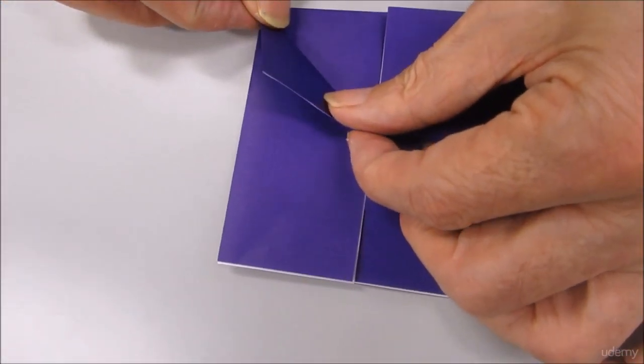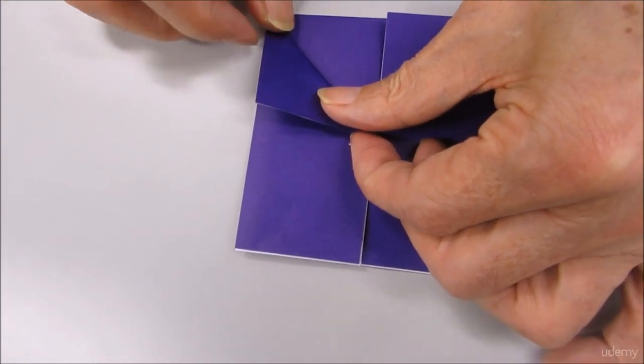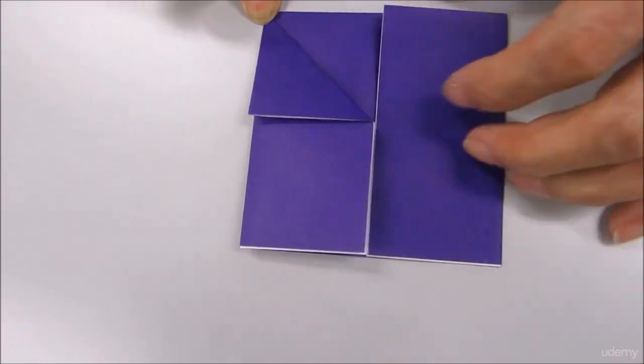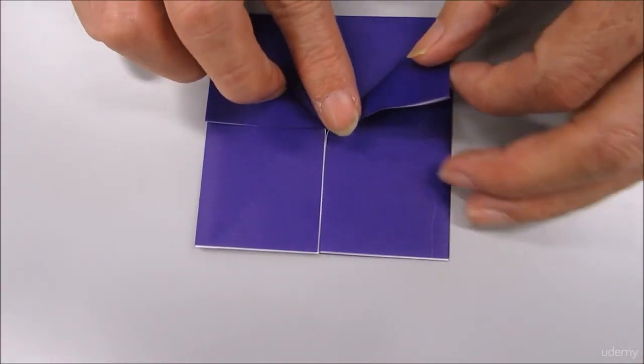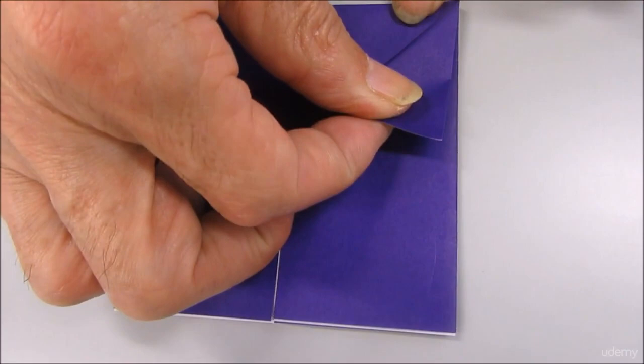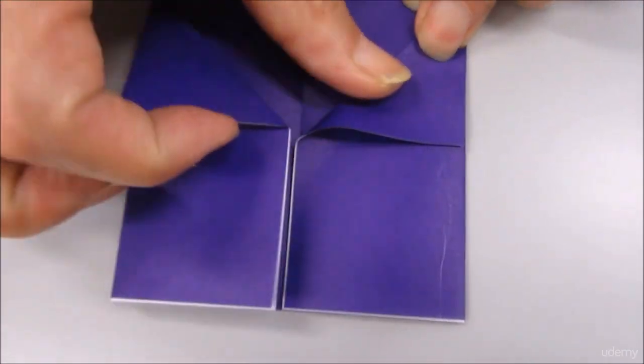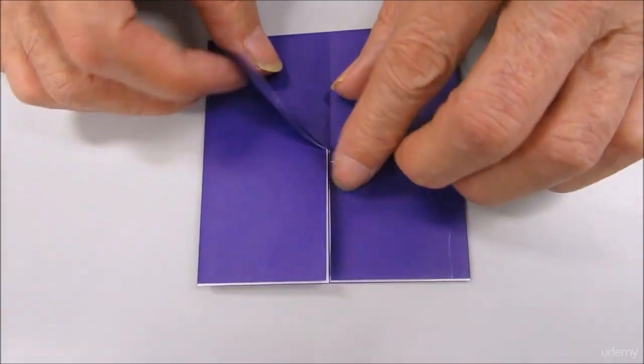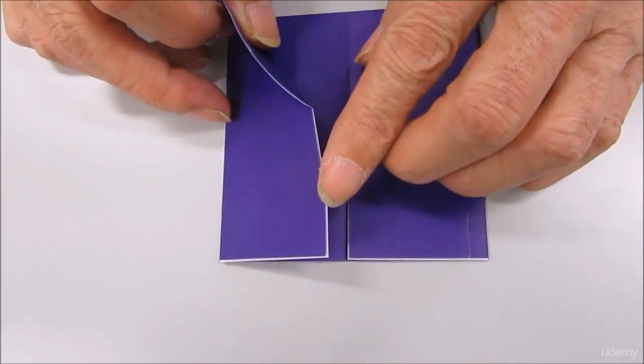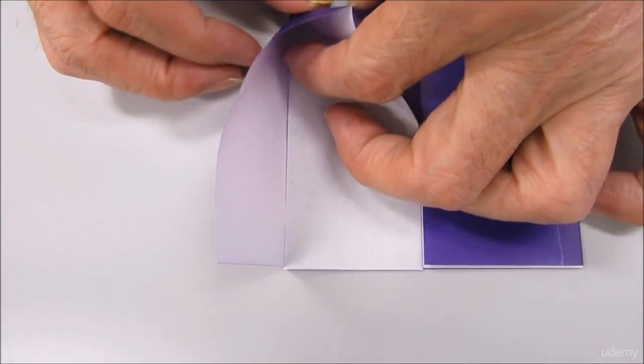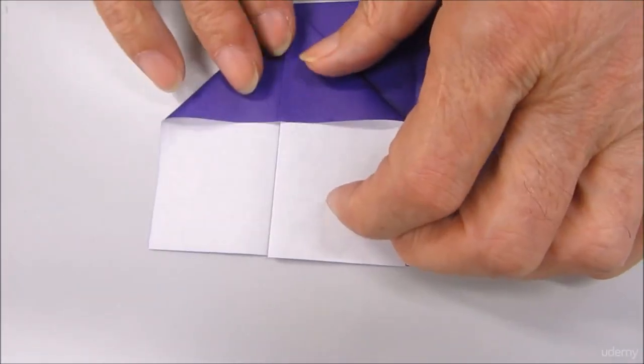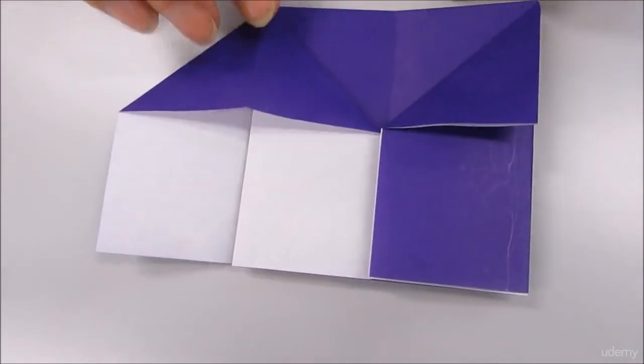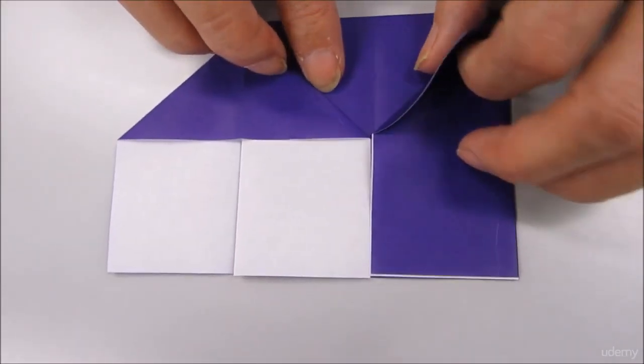Fold a triangle up on that small rectangle. Then open this area. Same for the other side.